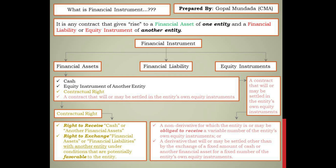We understand the meaning of financial instrument with a real-life example: asset for me is liability for you, and asset for you is a liability for me. For example, if Unique Industry holds shares and debentures of Reliance Industry - in this case, the shares and debentures are an equity instrument for Reliance entity. If any entity issues equity shares in the market and another entity holds them, that is a financial asset for the holding entity but an equity instrument for the issuing company.